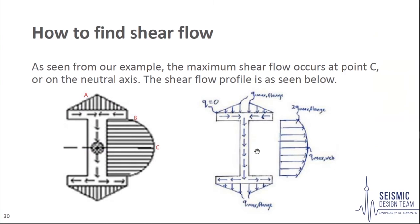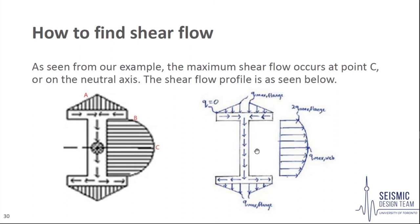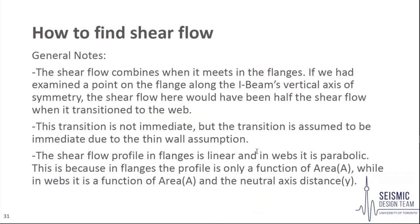Looking at the shear flow profile along the I-beam cross section, C is the maximum shear stress. If we continue analyzing shear flow in the flanges to the vertical axis of symmetry, we find the shear flow at the beginning of the web is double the maximum shear flow in each flange, because the shear flows in the flanges combine. This transition is not immediate, but we assume it to be so due to our thin-walled assumption. Another interesting observation is that the shear flow profile in the flanges is linear, while in the web it is parabolic, as the flanges involve only increasing area, while the web involves both changing area and changing neutral axis distance.